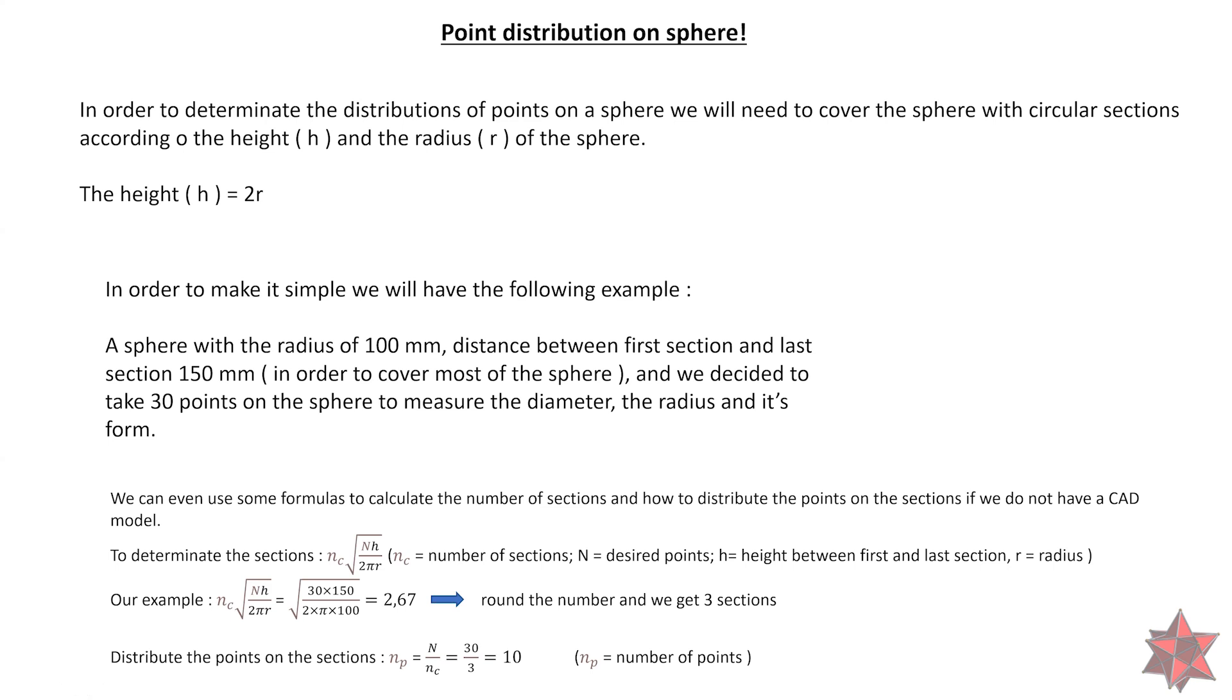So let's see how to distribute the points on the sphere. In order to determine the distribution of points on a sphere, we will need to cover the sphere with circular sections according to the height and the radius of the sphere. The height equals 2 times the radius.